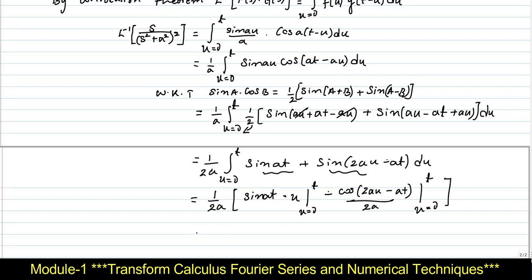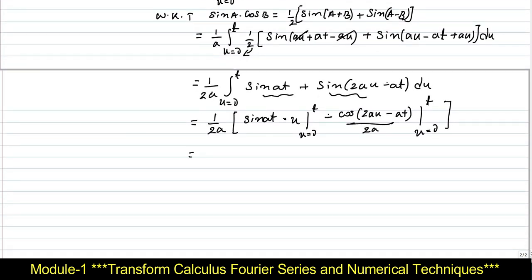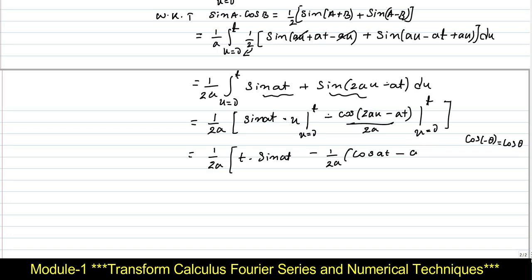Substituting the limits, we get (1/2a) times: [t·sin(at) − (1/2a)(cos(2at − at) − cos(−at))]. When u=t, we get cos(at), and when u=0, we get cos(−at) = cos(at) using the identity cos(−θ) = cos(θ). So cos(at) − cos(at) cancels, leaving us with the final simplified expression.